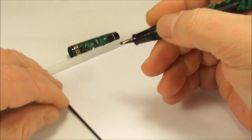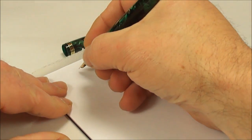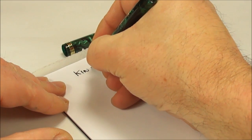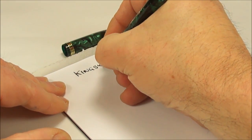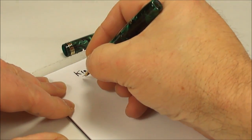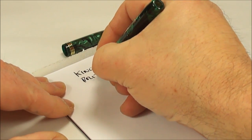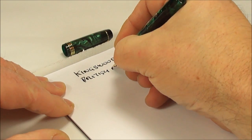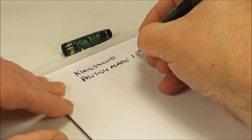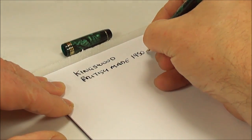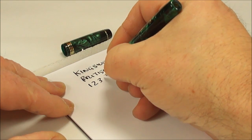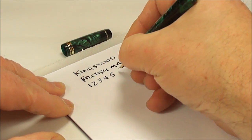So let's see how the pen actually writes. What we have for you is a Kingswood, as we said it's a British made fountain pen, and we're dating it from the 1950s.